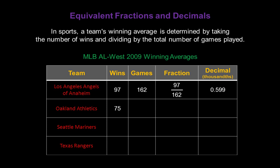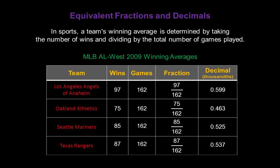The Oakland Athletics won 75 games that year out of their 162-game season, so that's a fraction of 75 over 162. Divide the two numbers to get a decimal of 0.463. The Seattle Mariners won 85 games out of 162, giving a fraction of 85 over 162 and a winning average of 0.525. The Texas Rangers won 87 games out of 162 — that's 87 over 162, which is a decimal of 0.537.